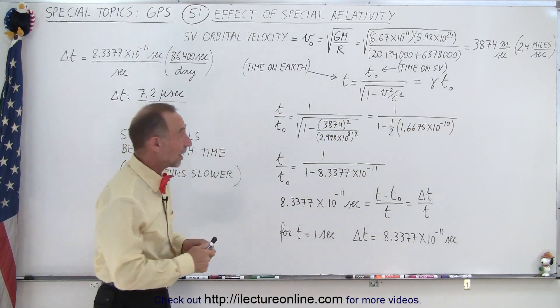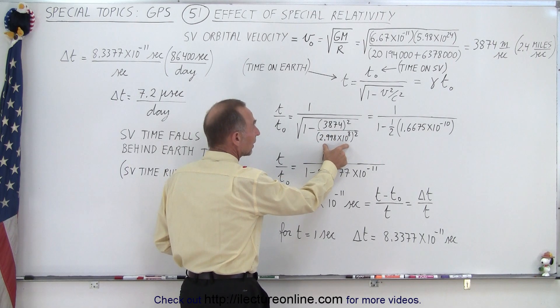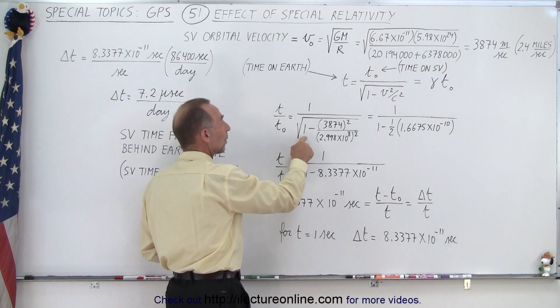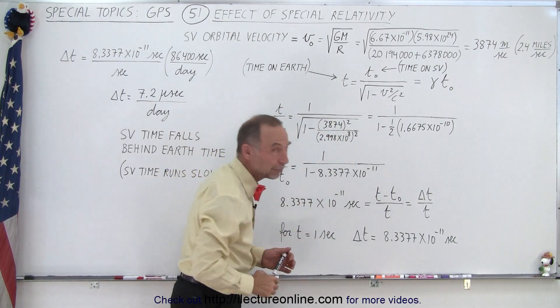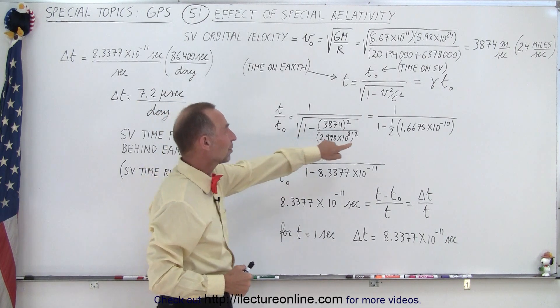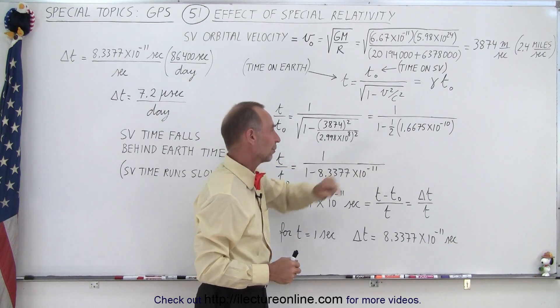When we plug in the values, there's our 3874, and there's the speed of light, and we go ahead and calculate it. When we take the square root of 1 minus a very tiny number, that's difficult to do, and so therefore we use the approximation like this, and that's very close to the actual value.